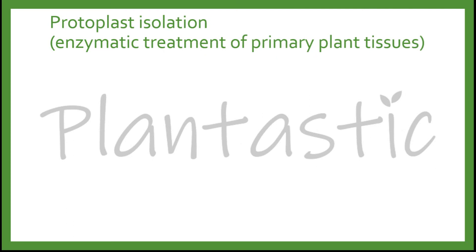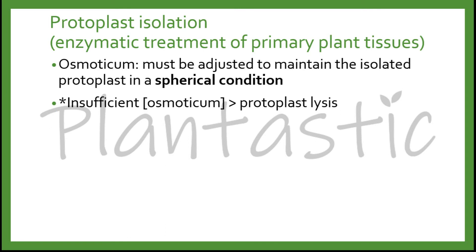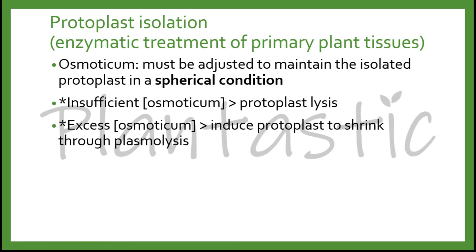The osmotic agent is very crucial and must be adjusted to maintain isolated protoplasts in a spherical condition. The protoplasts exist in spherical condition because a protoplast is a plant cell without the cell wall that normally maintains a rectangular shape. In cases of insufficient osmotic agent concentration, it will cause protoplast lysis. In excess osmotic agent concentration, it will induce the protoplast to shrink through plasmolysis. The square bracket symbol here represents concentration.